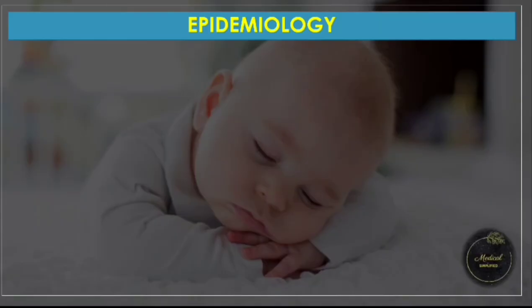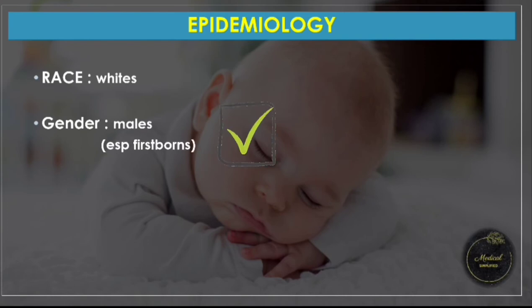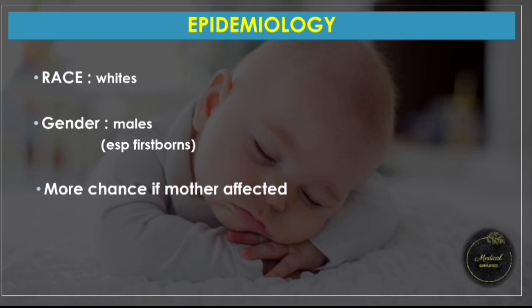Looking at the epidemiology of pyloric stenosis: it is seen more commonly in whites than blacks and is rare in Asians. Males are affected more, especially firstborn males — a very important exam question. It is seen more commonly if the mother had pyloric stenosis. Some associations with blood groups B and O have also been noticed.